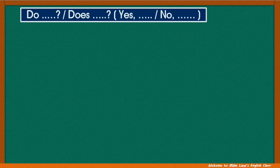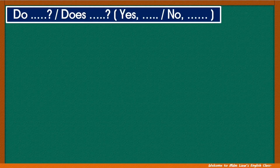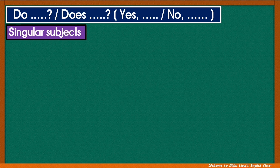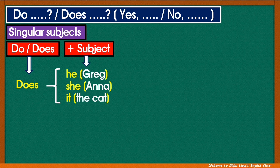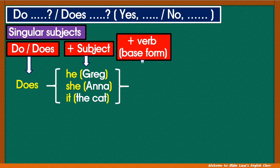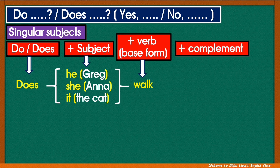Now let's learn how to form questions using the verb to do — do or does — with yes and no answers with singular subjects. First, let's look at the question structure. Begin your question with do or does. For singular subjects, we use does, followed by the subject. Singular subjects: he, she, it. Remember, for singular subjects he, she, it, we need to use does, followed by the verb in the base form — for example, walk — then the complement — for example, to school — and the question mark.